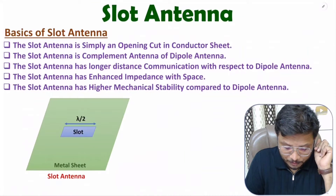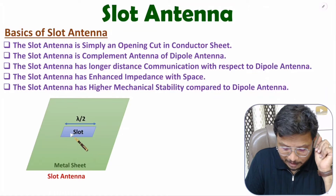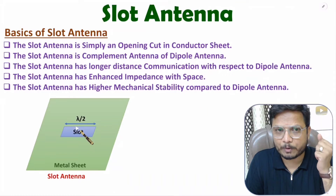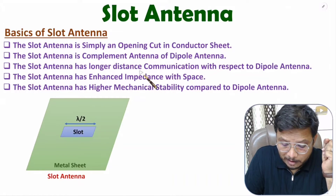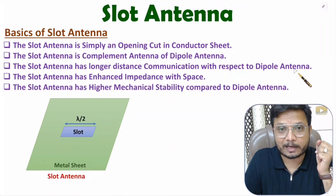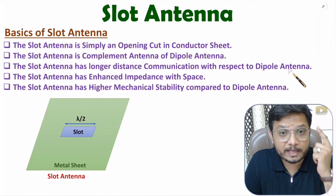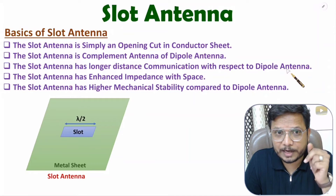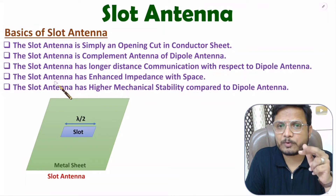If you observe, this slot has a length of lambda by 2, and the complementary structure of this would be a metal strip of length lambda by 2 — that is simply a dipole. So slot antenna is the complement of dipole antenna. Slot antenna has longer-distance communication compared to dipole antenna because slot antenna has better impedance matching with free space.